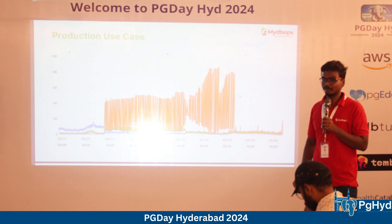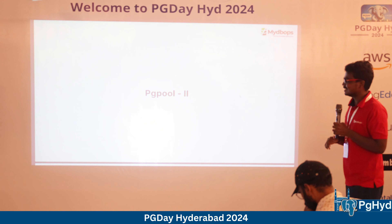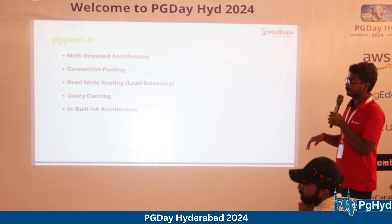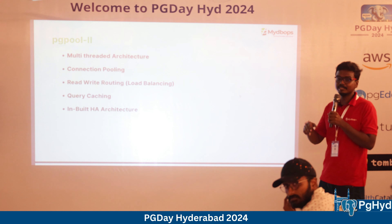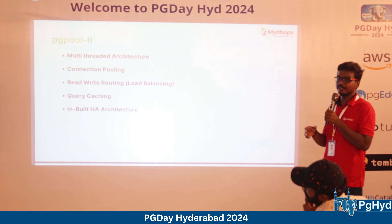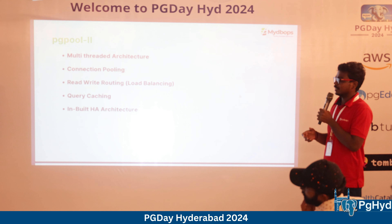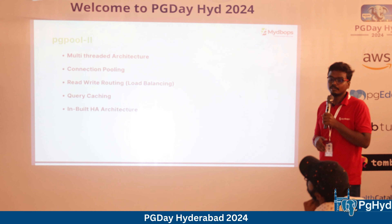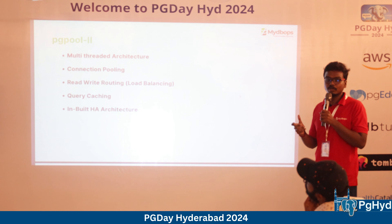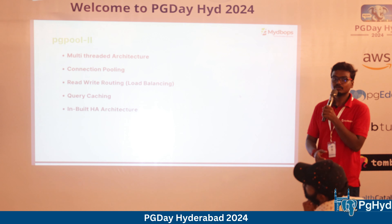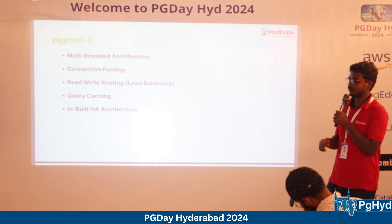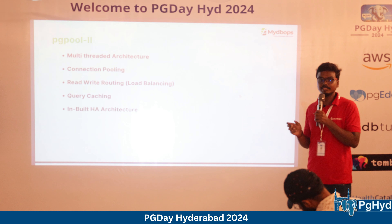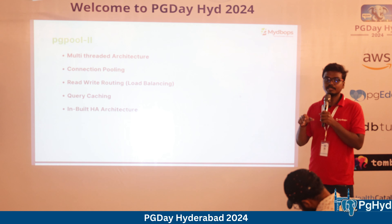If you have 10 application servers, you can have 10 separate PG Bouncer instances — one per application server. It's lightweight and easy to install with the same configuration files. This is actually a good approach: if one application server and its PG Bouncer go down, the other application servers continue serving traffic.